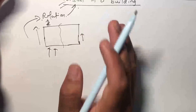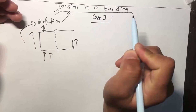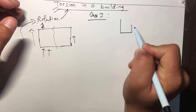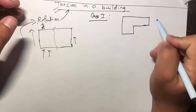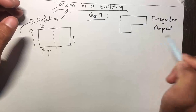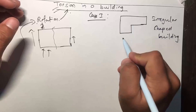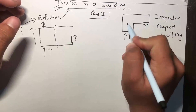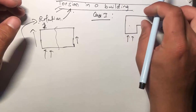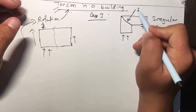There are different cases in which torsion can happen in a building. Case one: when a building has an irregular shape. In this case, when the building is subjected to a lateral load, one portion undergoes displacement differently compared to another portion. Due to this reason, that area becomes stressed.